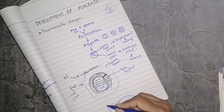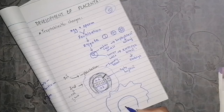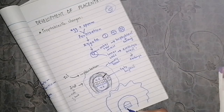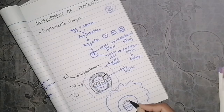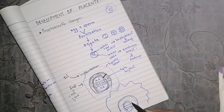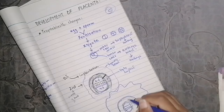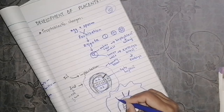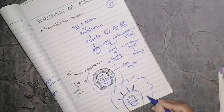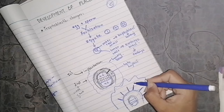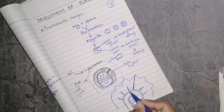Let's look at the structure. We have syncytiotrophoblast on the outside and cytotrophoblast inside. We also have epiblast and hypoblast, amniotic cavity, and yolk sac. The extra-embryonic mesoderm forms the inner layer. The outer region we call the chorionic plate. Now, structures called villi form from the cytotrophoblast. There are three types of villi: primary villi, secondary villi, and tertiary villi.